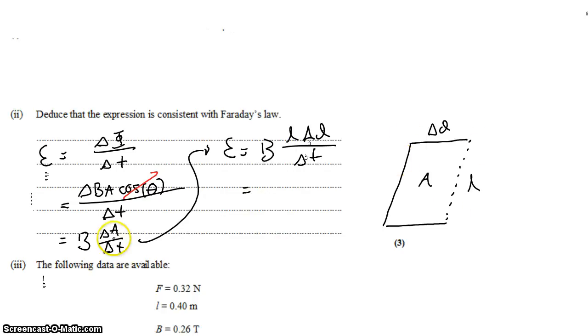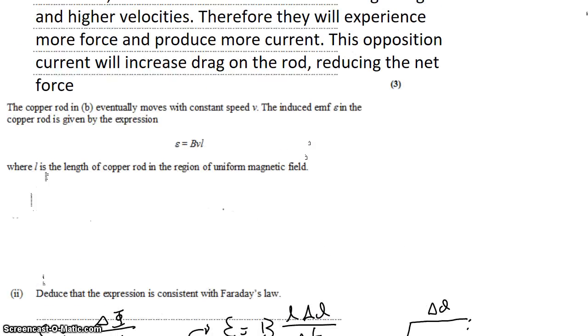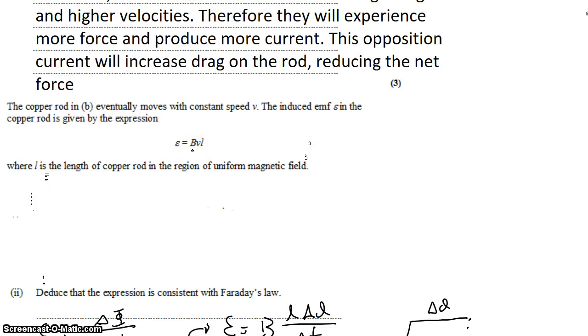So the area then is equal to L delta D and the time is still delta T. So L delta D is that area, which gives us B L delta D on delta T, which is velocity. And we get EMF is equal to BLV or BVL, however you prefer.